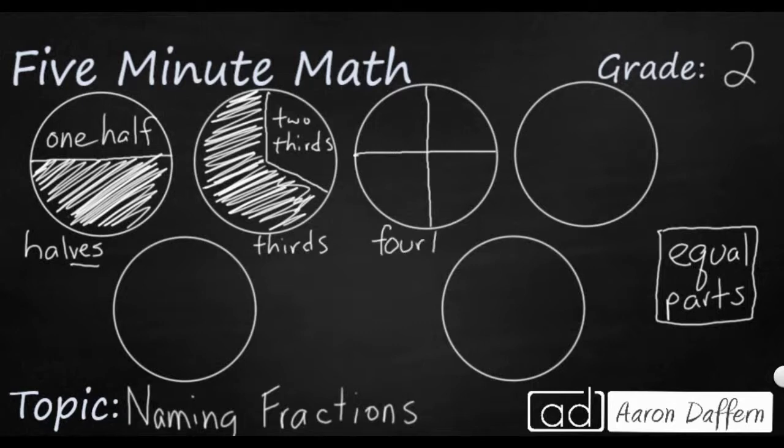Now halves and thirds are a little bit different. Their fractional name changes a little bit. So 3 changes to thirds. But after you get past thirds, every single fractional name is going to be the number of pieces plus THS. It's going to be very easy to remember. Halves and thirds are just the ones that are a little bit different.